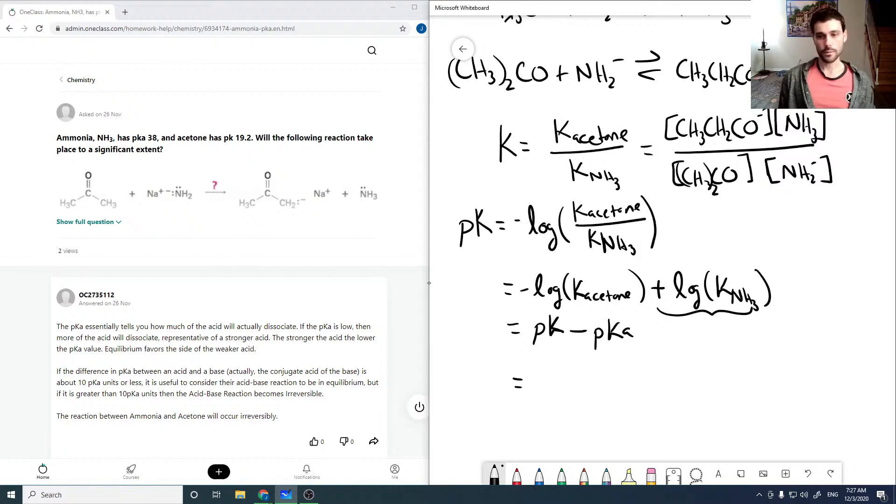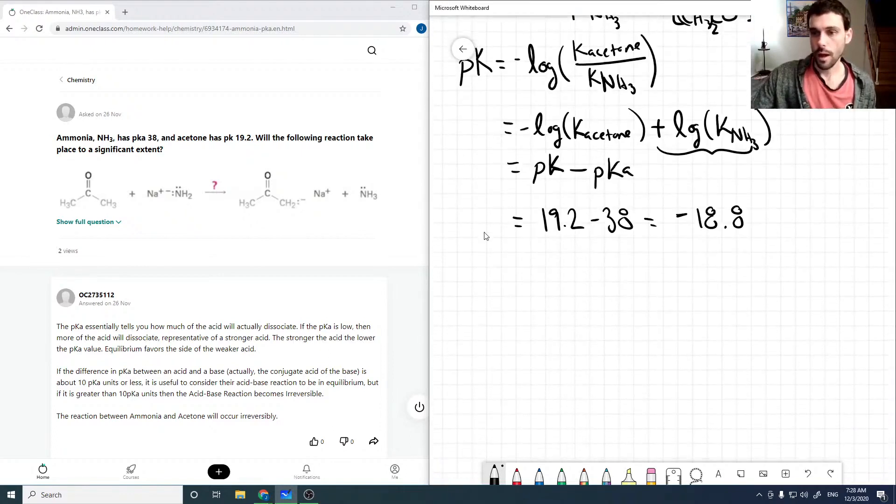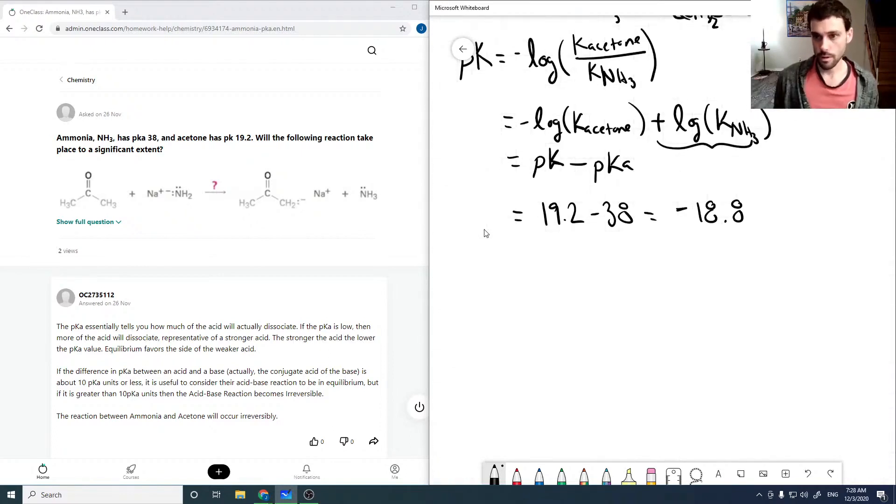Oh yeah, that makes sense. This equals 19.2 minus 38, values given in the question, which comes out to be negative 18.8. So that means the pK for our total reaction is negative 18.8, which means, as it's deeply negative, that the reaction is heavily favored.